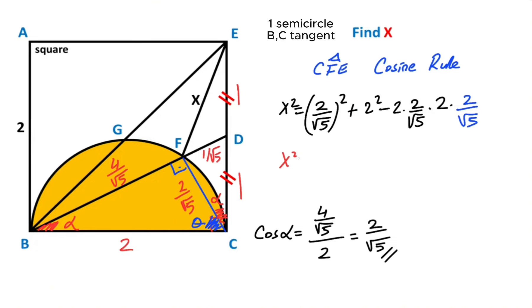So x² = 4/5 + 4 - 16/5, right? Right. So if we equalize numerator and denominator, x² = (4 + 20 - 16)/5. So x² = 8/5.